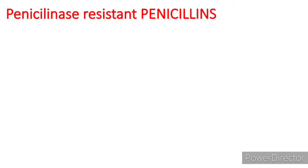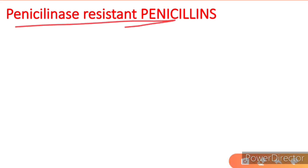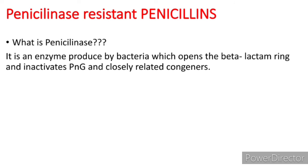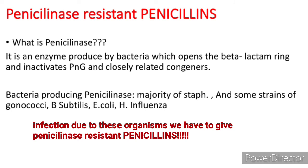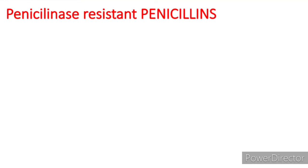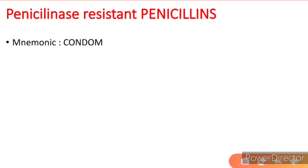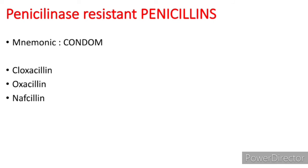Penicillinase-resistant penicillins are most commonly asked in exams. Penicillinase is an enzyme produced by bacteria that opens the beta-lactam ring and inactivates Penicillin G and closely related congeners. Bacteria producing penicillinase include the majority of staphylococci and some strains of gonococci, E. coli, and influenza. The mnemonic for penicillinase-resistant penicillins is CONDOM: Cloxacillin, Oxacillin, Nafcillin, Dicloxacillin, Methicillin.